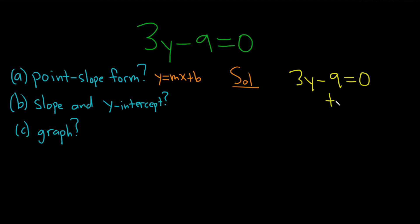So we can just add 9 to both sides, plus 9 plus 9, so we get 3y is equal to 9. We're almost done, now we can just divide by 3. And divide by 3. That gives us y equals 3.